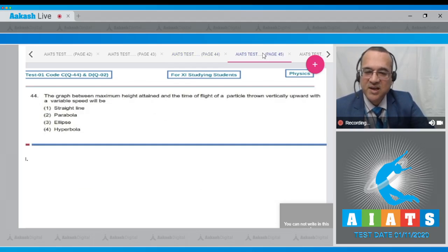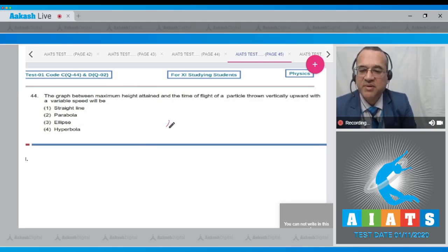Question number 44: the graph between maximum height attained and the time of flight for a particle thrown vertically upward with variable speed will be a straight line, parabola, ellipse, or hyperbola. For any particle thrown with speed u, the maximum height is equal to u² by 2g and the time of flight is equal to 2u by g.